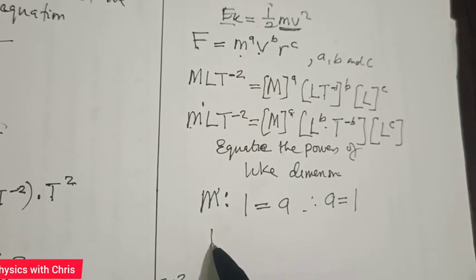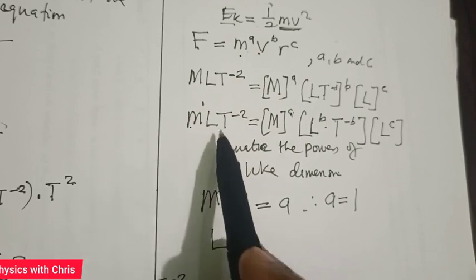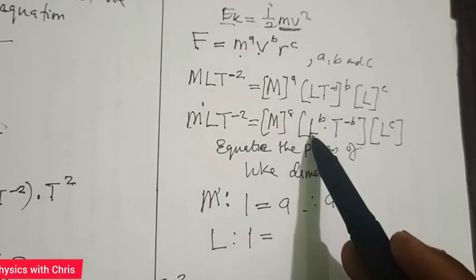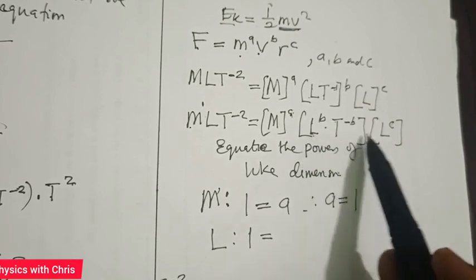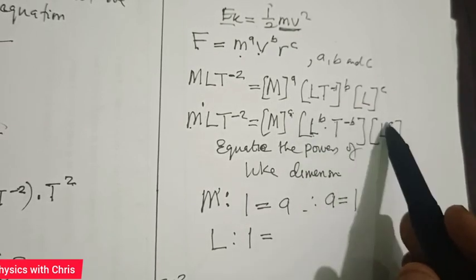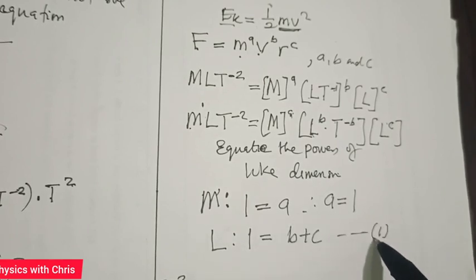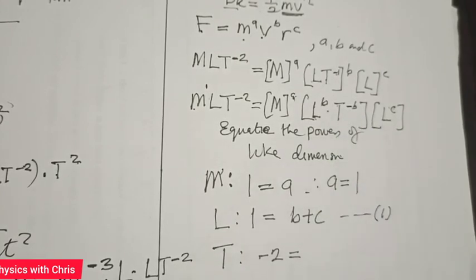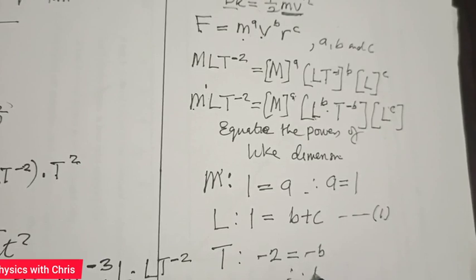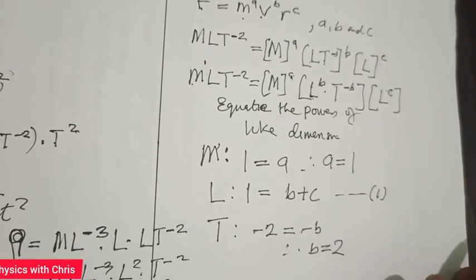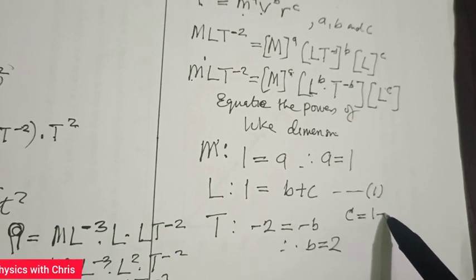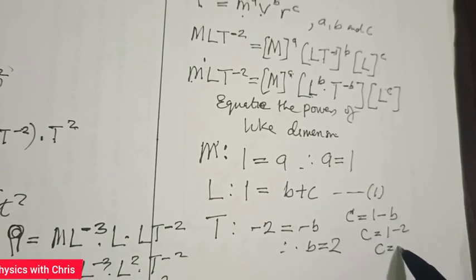Equating the powers of T: on the left-hand side it is −2, on the right-hand side it is −b, so −2 = −b, meaning b = 2. From equation 1, b + c = 1, so c = 1 − b = 1 − 2 = −1. So the constants are a = 1, b = 2, and c = −1.